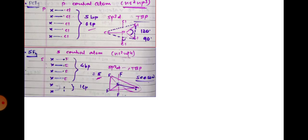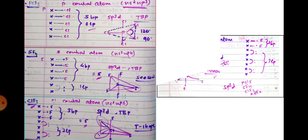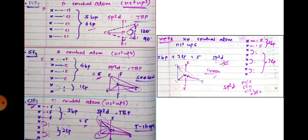Now moving to sp3d hybridization examples. In PCl5, phosphorus is the central atom with ns2np3 — five valence electrons. Each chlorine shares one electron, giving five bond pairs and zero lone pairs. Total = 5, so sp3d hybridization. Geometry and shape are both trigonal bipyramidal, with bond angles of 120° and 90°.